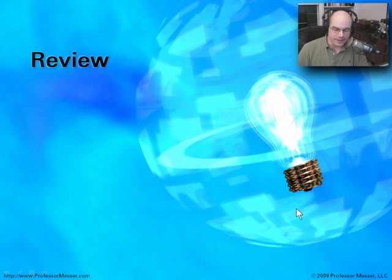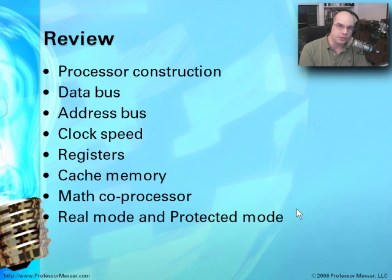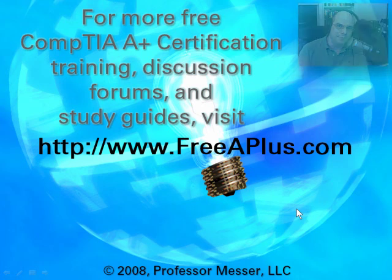Let's review what we've talked about. We went through exactly how a processor is constructed, looked at the architecture, and saw how all of the different buses interacted with each other. We looked at how cache memory is associated with all of those things, went into detail about registers, and how the math coprocessor or floating point unit is now used. Finally, we understood how real mode and protected mode are used inside a computer and how it changed the way we work with computers today. For more CompTIA A-Plus videos, study guides, and online message boards, feel free to visit our website at freeaplus.com.